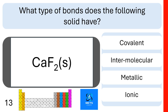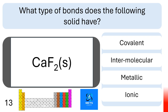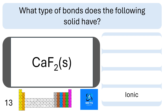Question thirteen: what type of bonds does calcium fluoride solid have between its particles? Are they covalent, intermolecular, metallic, or ionic? This has ionic bonds — it is an ionic substance.